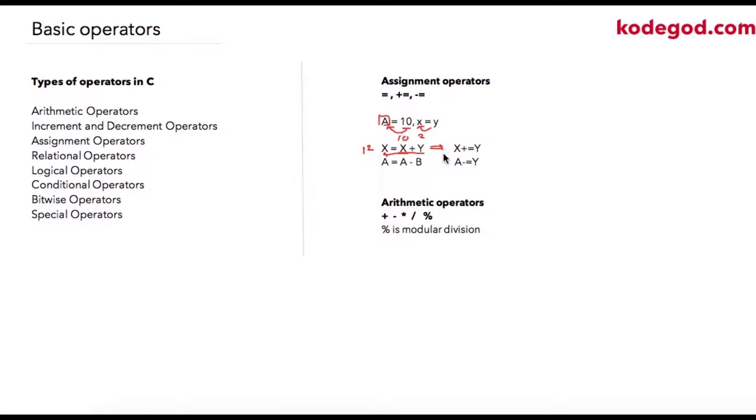So there's an alternate way in C. Instead of writing X is equal to X plus Y, we can use plus equal to operator. So it works in the same way. What it says is increment value of X by Y. So I'm saying increment value of X, which is 10 by 2. So my X becomes 12.